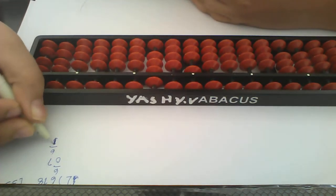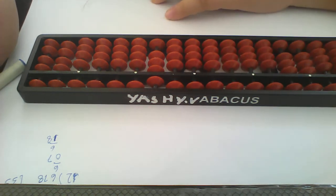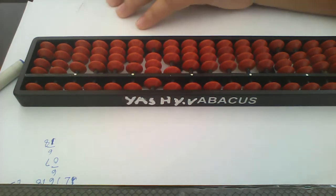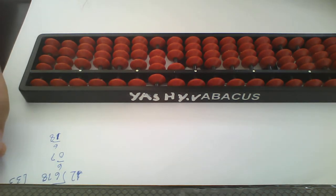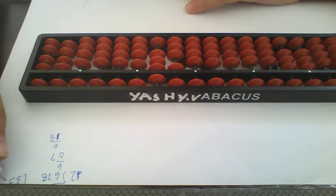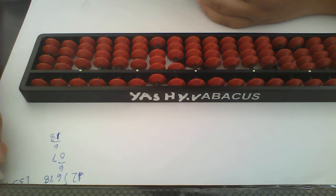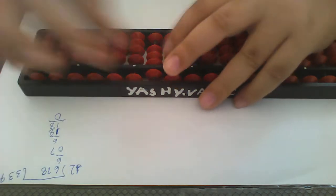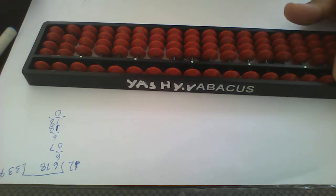And now the remainder is 1, so we have 18 left as the remainder. 18 is coming in — 9, 9 right? So we will put here 9. 18 minus 18 and the answer is 0. So our answer is 339.